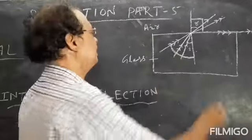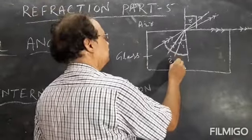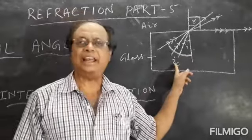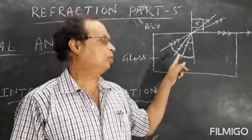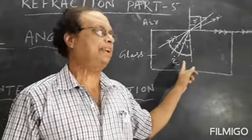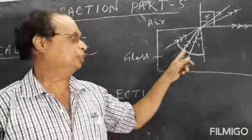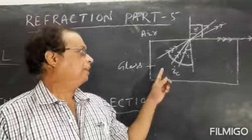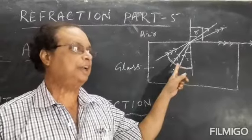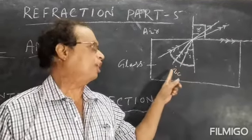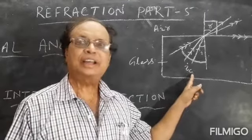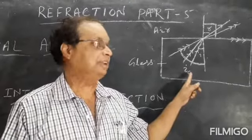This angle is called the critical angle. It is represented by IC, where I is for angle of incidence and C is for critical angle. In some books, only capital C is used to represent the critical angle.